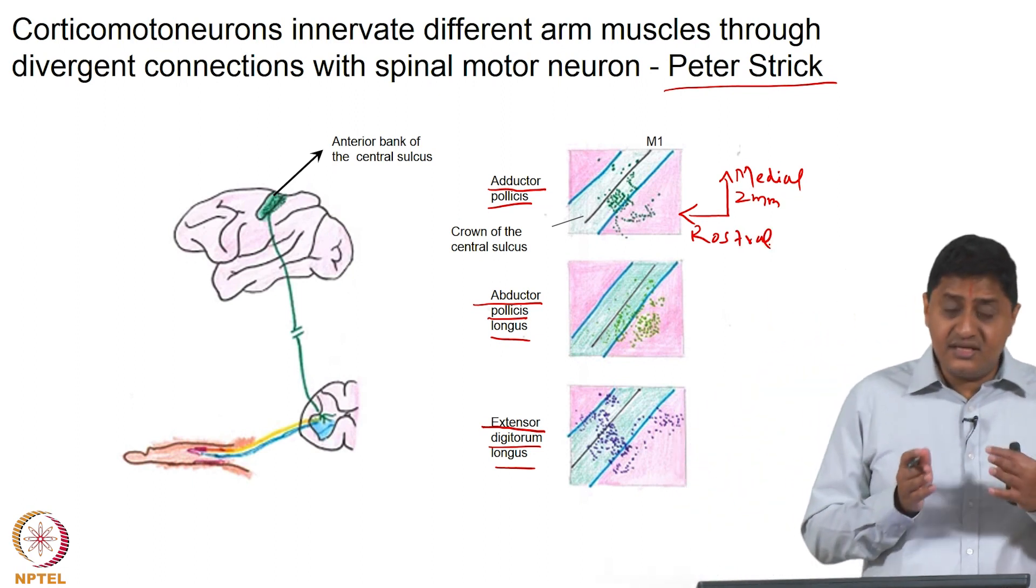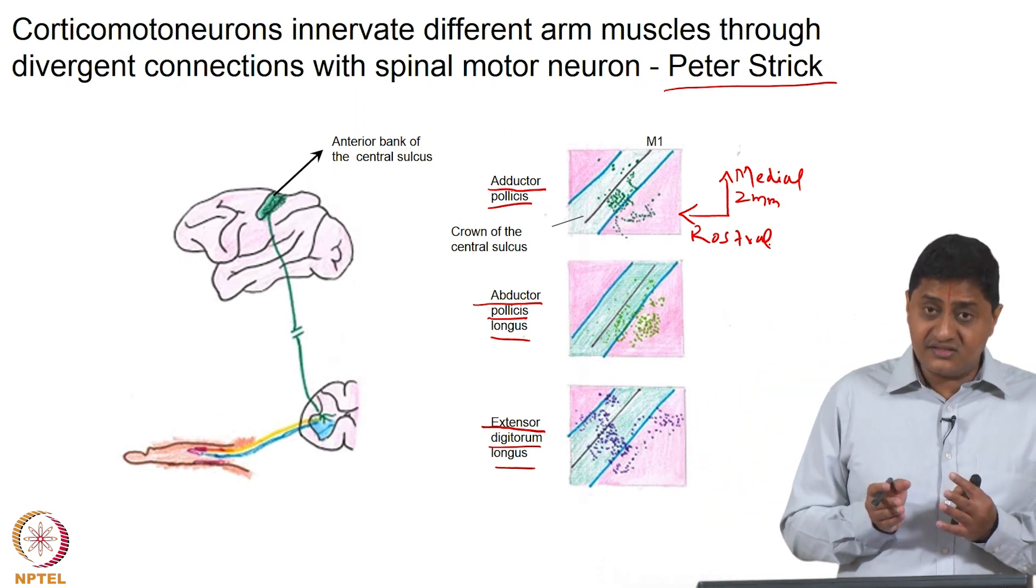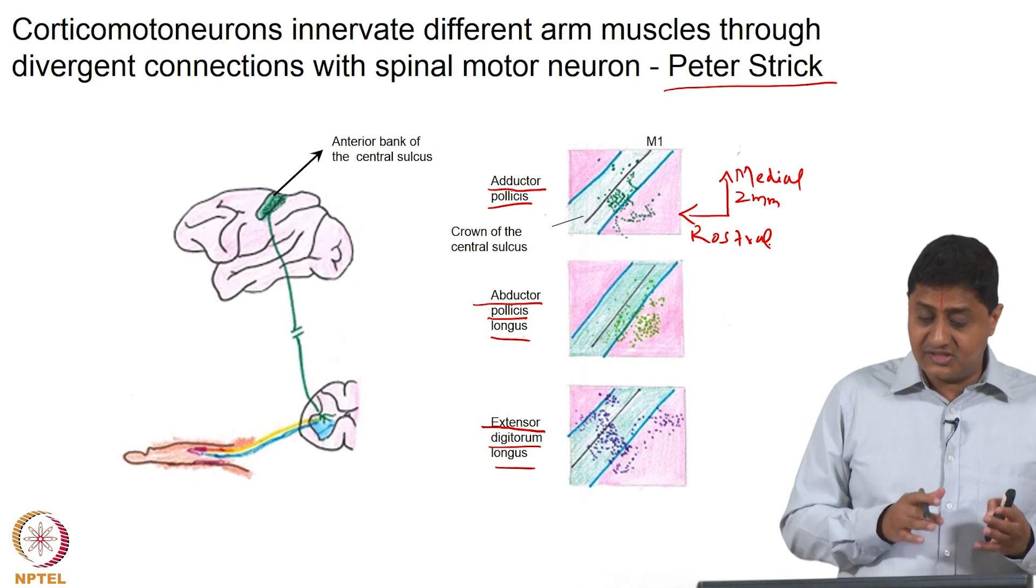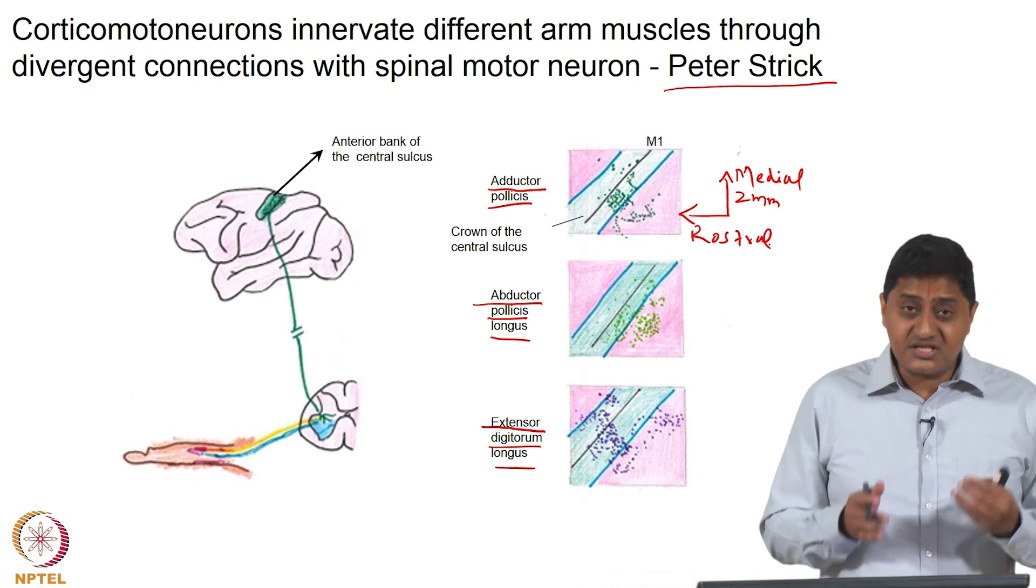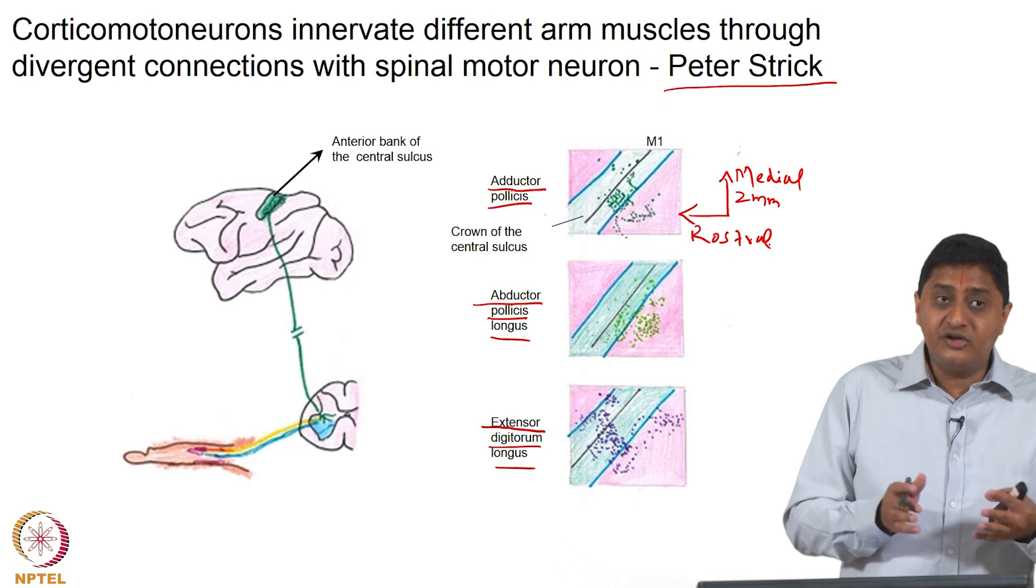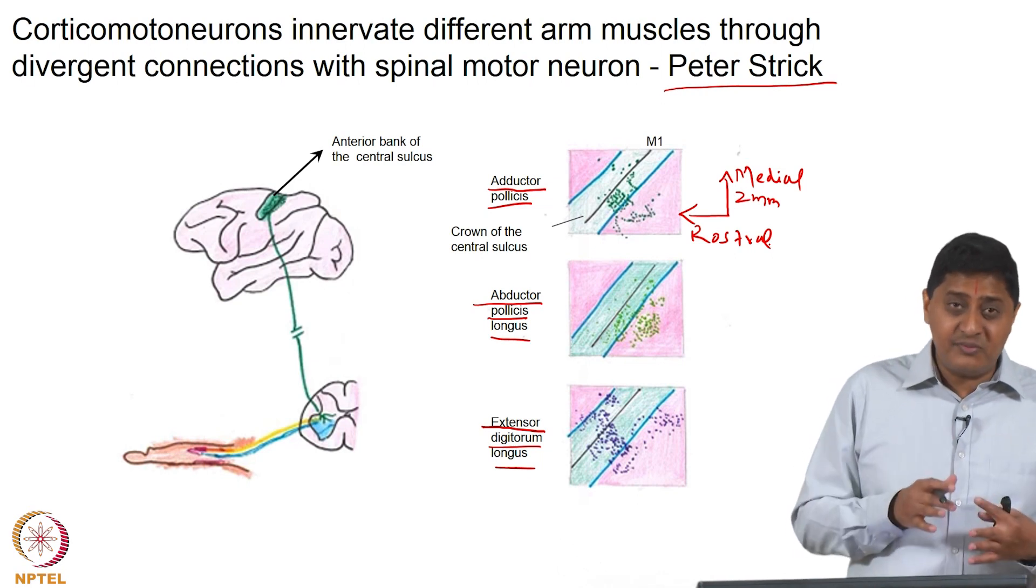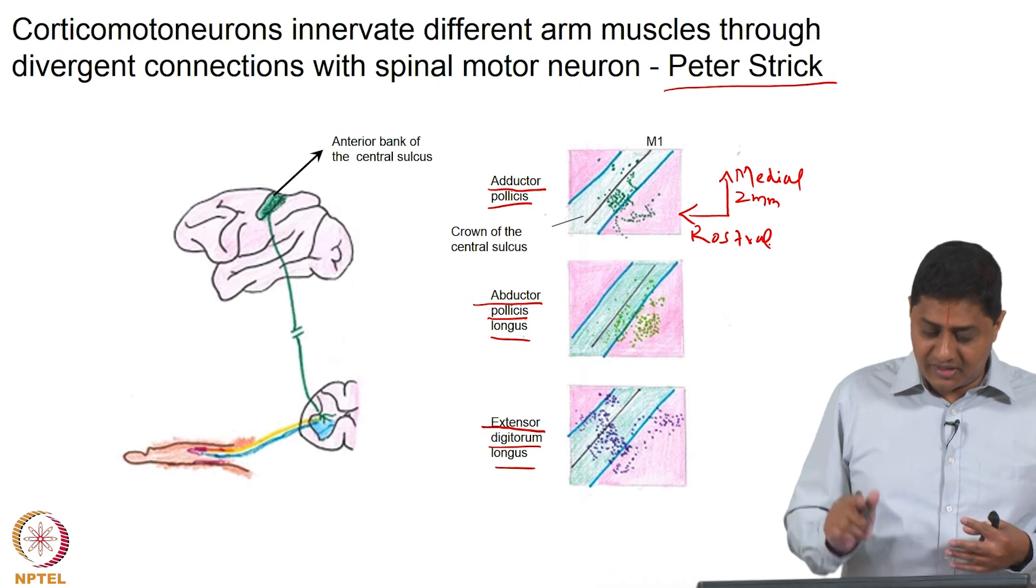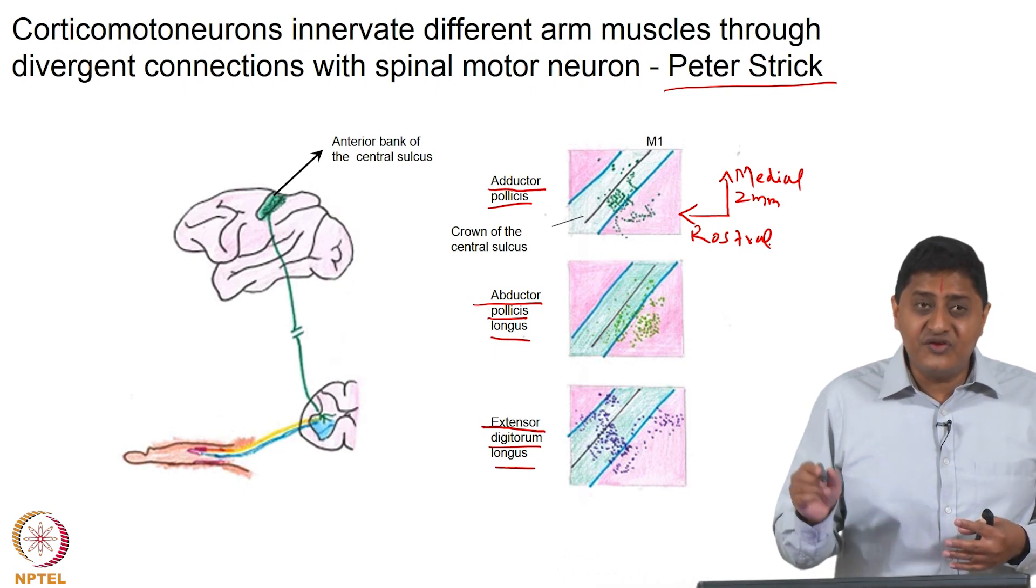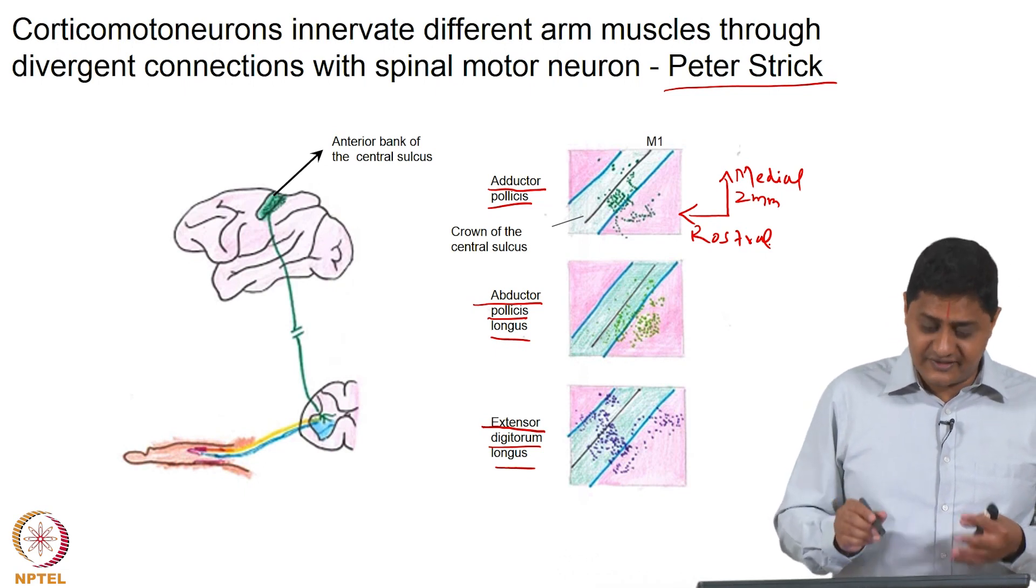The distance is about 2 mm. This direction is medial and this direction is rostral. Note this is in the specific area that is just rostral to the central sulcus, or just anterior to the central sulcus.